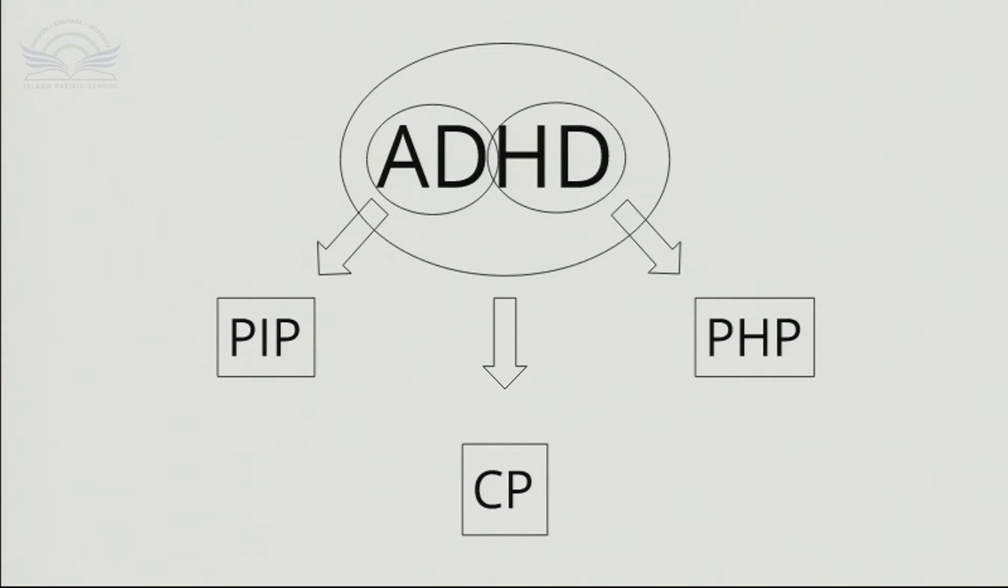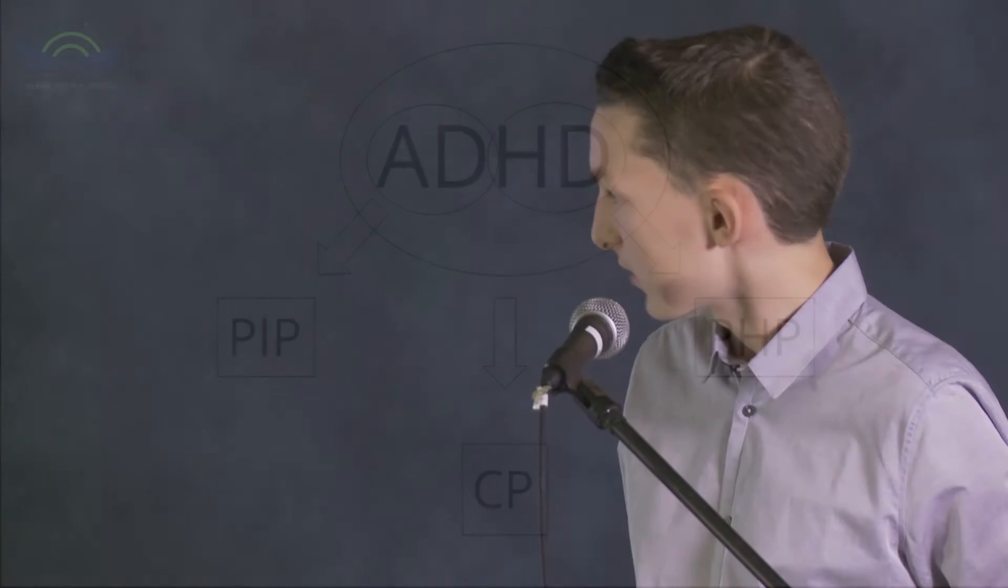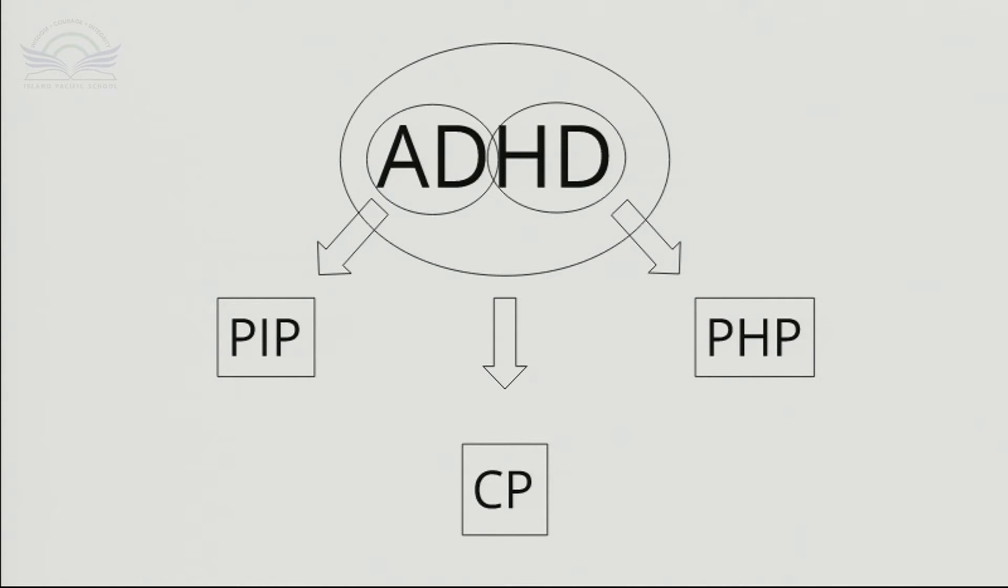And there's three types. PIP, PHP, and CP. So the acronyms on the slide stand for predominantly inattentive presentation, predominantly hyperactive presentation, and the combined presentation. PIP is the type of ADHD that I have. So here's a diagram that shows you what the gist of PIP, PHP, and CP kind of is. While not scientifically accurate, I feel it helps to understand what each one of these acronyms means. The AD in ADHD, in my mind, relates to PIP, predominantly inattentive presentation. The HD in ADHD stands for hyperactivity disorder, which pretty much directly relates to predominantly hyperactive presentation. And the entire acronym, ADHD, in my mind, is kind of like the combined presentation, because you have both attention deficit and hyperactivity disorder.